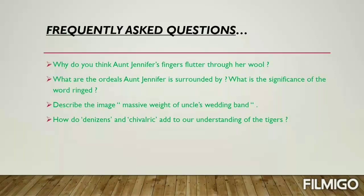First frequently asked question: Why do Aunt Jennifer's fingers flutter through her wool? Aunt Jennifer was weak and meek. She lacked confidence in her marriage and was very much dominated by the uncle. Society norms did not allow her to come out of the marriage. That is why her fingers flutter and tremble, and she is in a terrified situation.